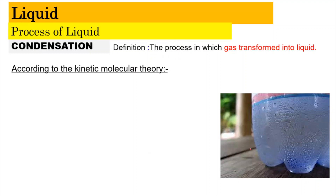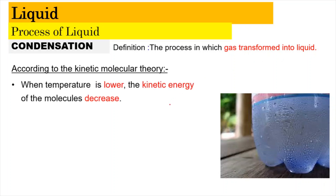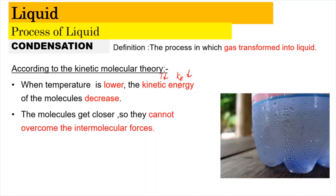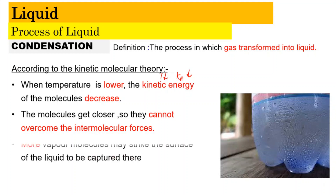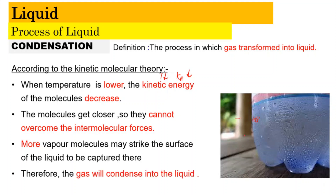Now we look at the process of condensation. Condensation is defined as the process in which gas transforms into a liquid. According to the kinetic molecular theory, when the temperature is lowered, the kinetic energy of the molecules slows down. As a result, the molecules get closer together and cannot overcome the intermolecular forces. This allows more vapor molecules to strike the surface and stay at one position, accumulating liquid particles together, so the gas from the surrounding is condensed into liquid.